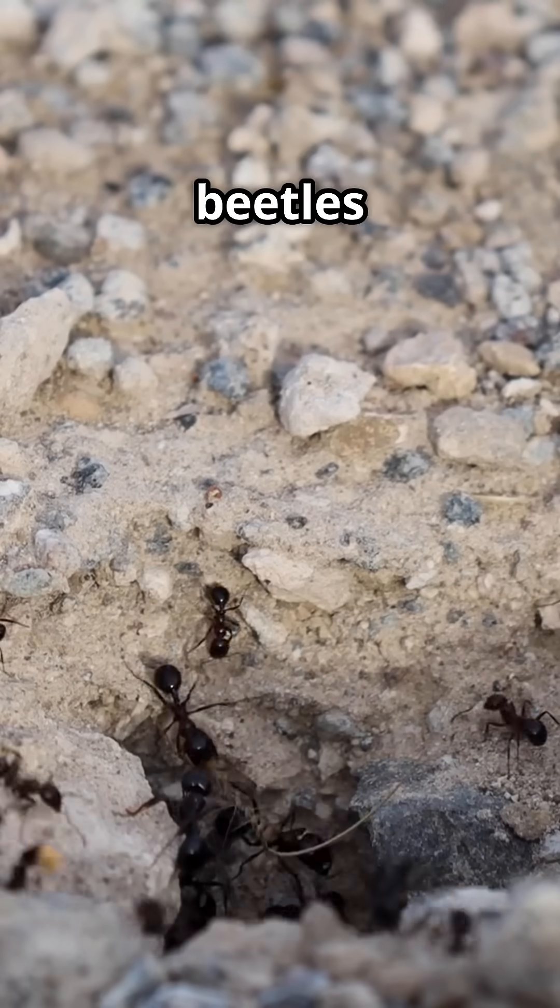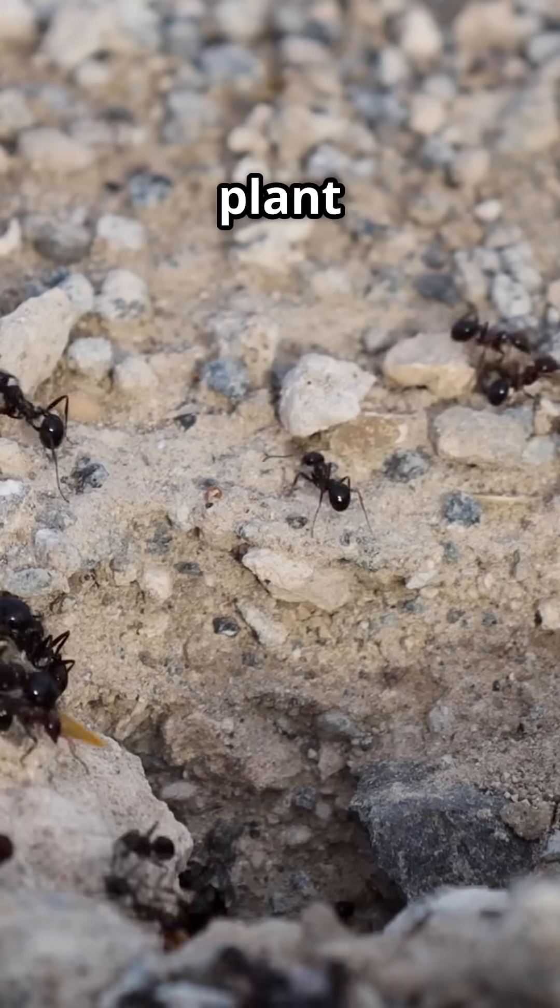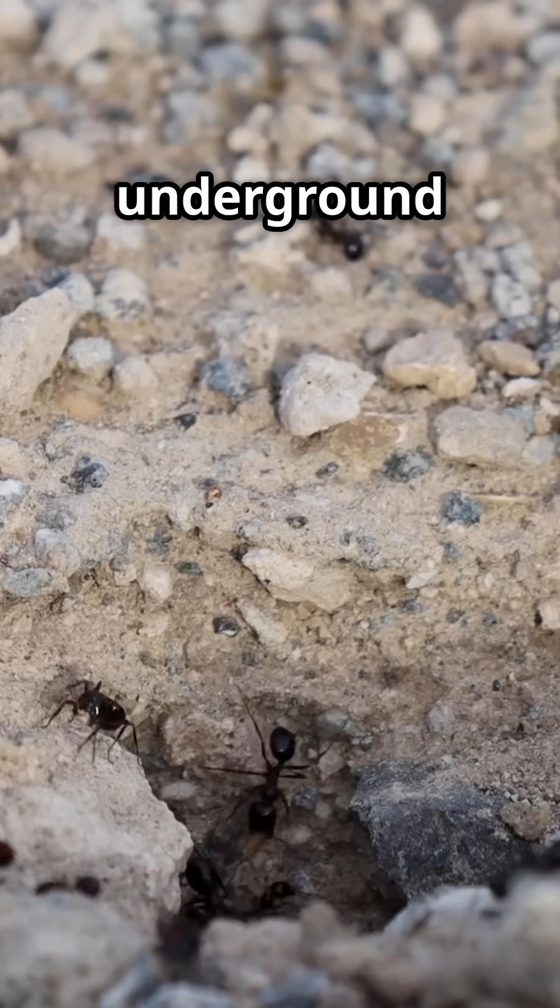Fact 5. Ants and beetles aerate the soil, making tunnels that help water and oxygen reach plant roots. They're the original underground engineers.